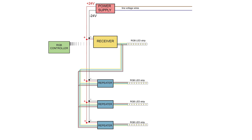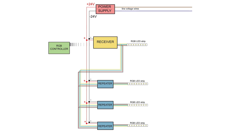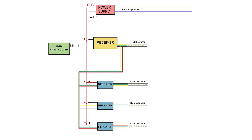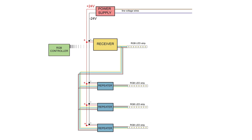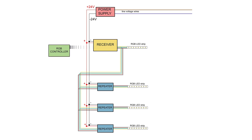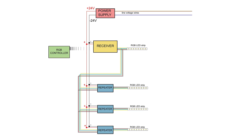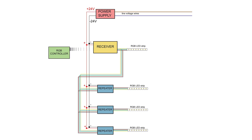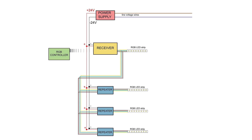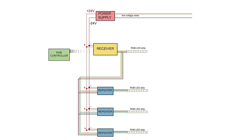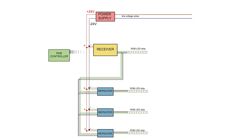Changes in voltage in each of the three color channels are what allow RGB strips to display a chosen color. Zero voltage yields an off state, while a full 12 volts in each channel would yield white.